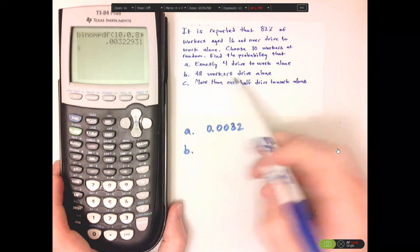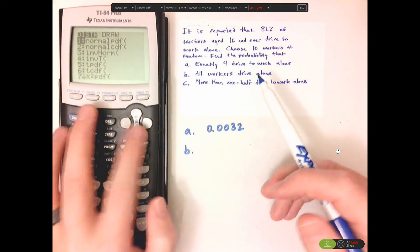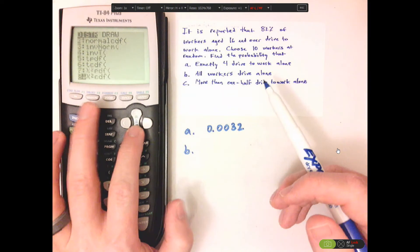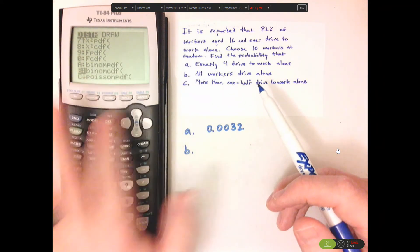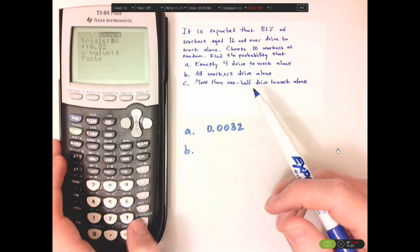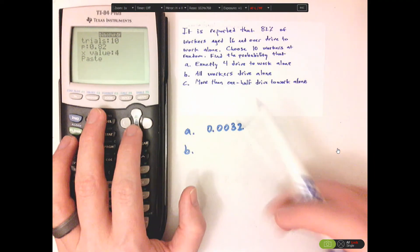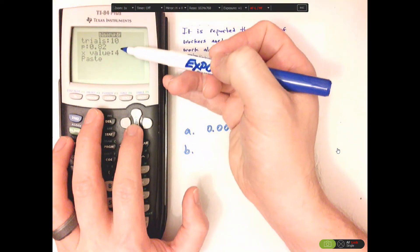All right, all workers. So second distribution. Scroll all the way down. Almost all the way down to binomial PDF. Trials, the number of trials are the same, which is 10.